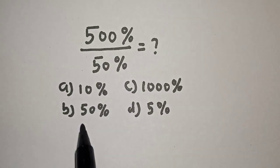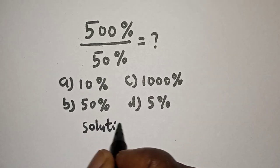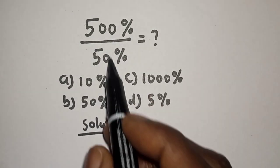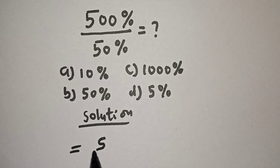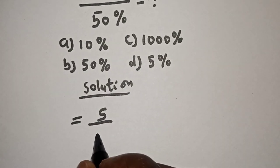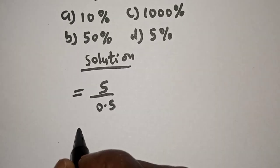Solution: 500% is simply 5. This is 5 over 50%, which is 0.5. Then this is equal to 5 over 0.5.